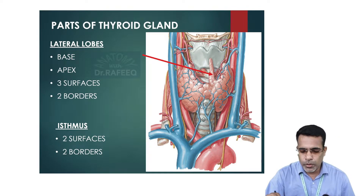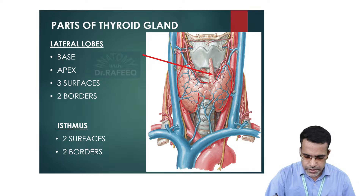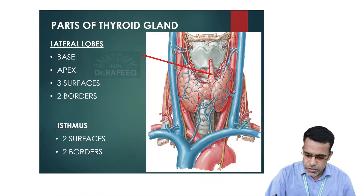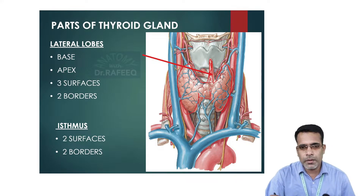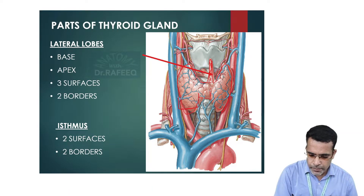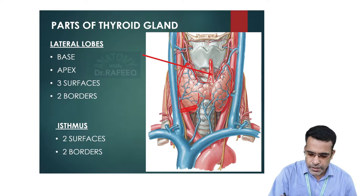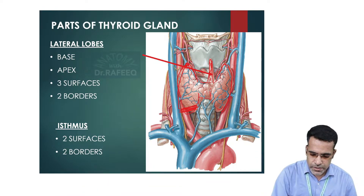Let us now discuss the various parts of the thyroid gland. We have a right lateral lobe and a left lateral lobe, connected by an isthmus. Occasionally, from the upper border of the isthmus there may be an upward projection called the pyramidal lobe, but this is not always present. Each lobe is roughly pyramidal in shape, with a base below and an apex located above. There are three surfaces: lateral, medial, and posterolateral.